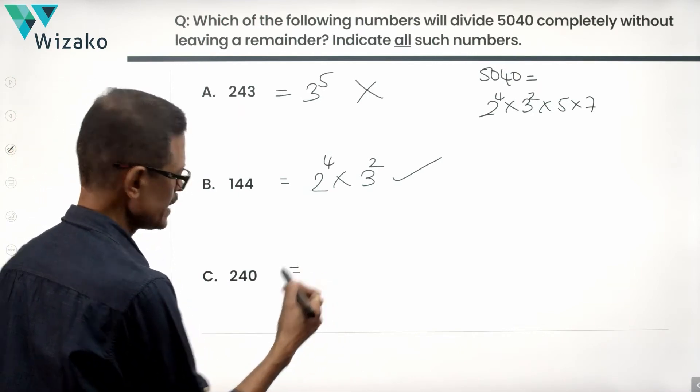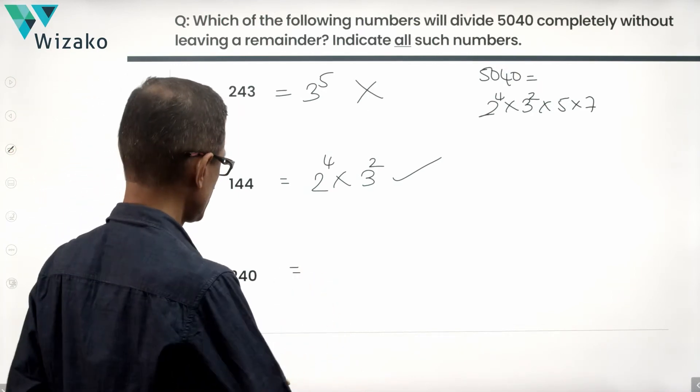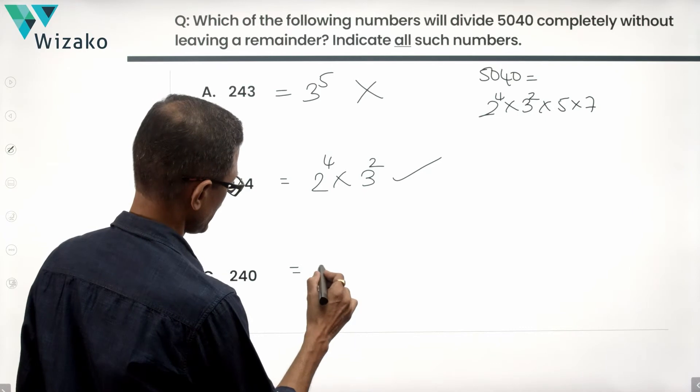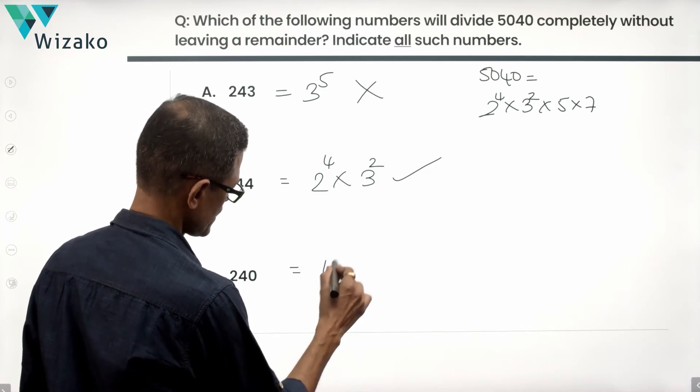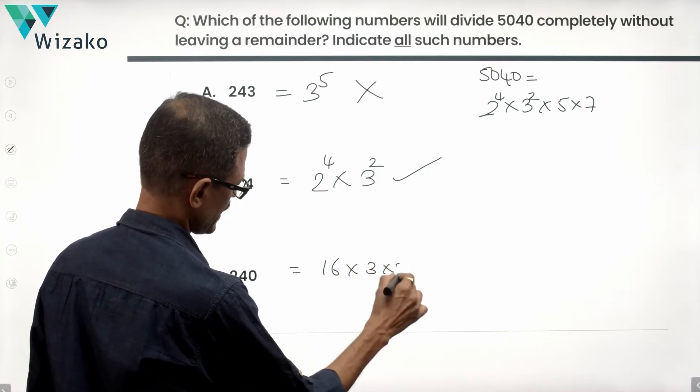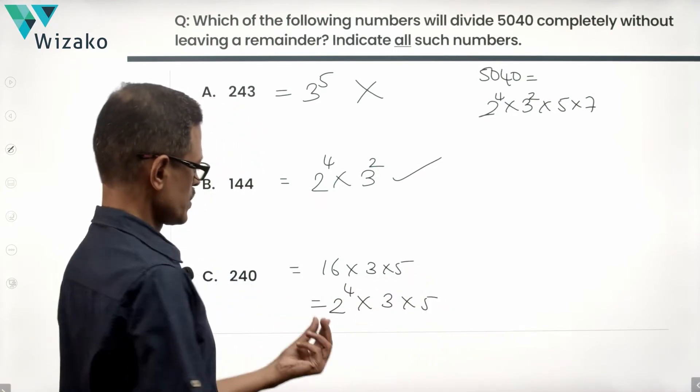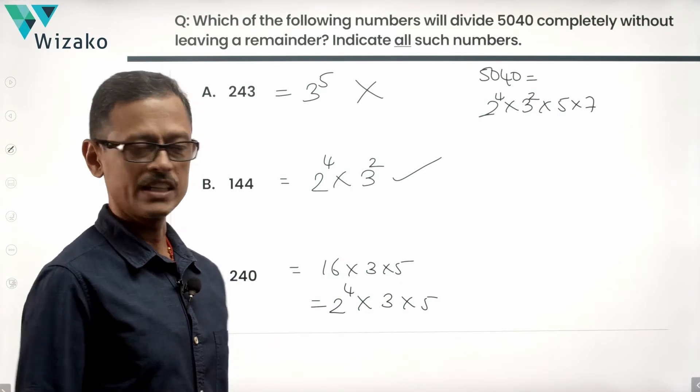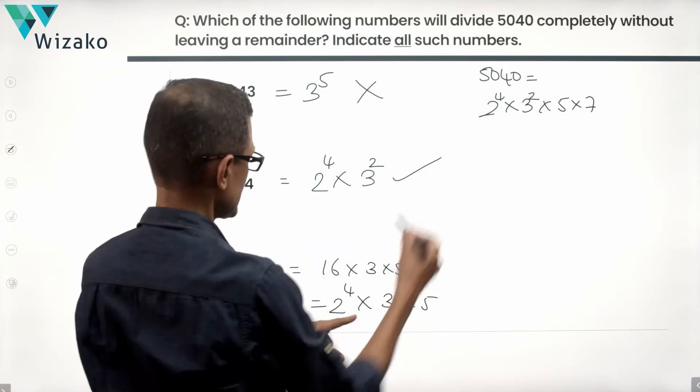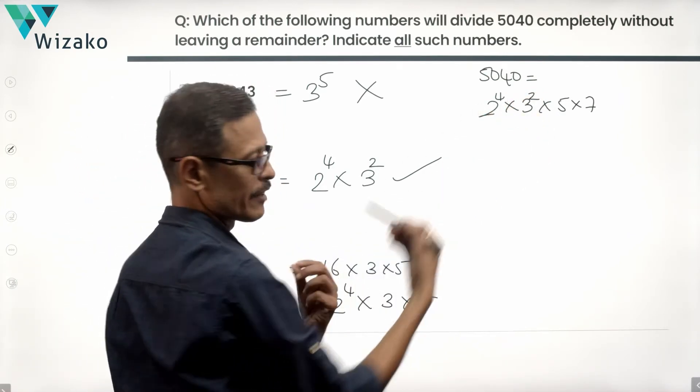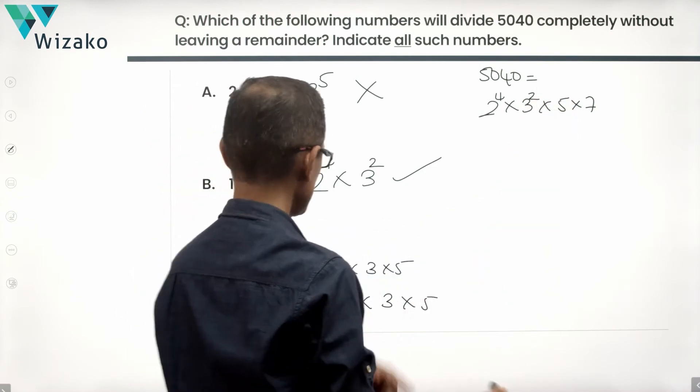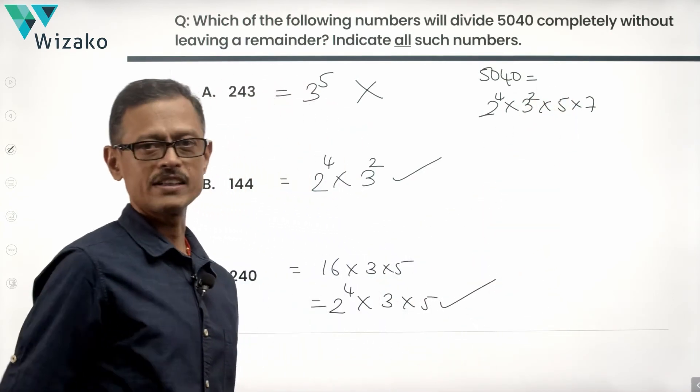240. 240 is 24 into 10, or 48 into 5. 48 can be written as 16 into 3 into 5, which is essentially 2 raised to the power of 4 times 3 times 5. So 16, 3 is 48. 48 into 5 is equal to 240. 2 power 4 is contained there. 3 square is available, so definitely 3 will divide it. 5 is there. So this number will also divide 5040.